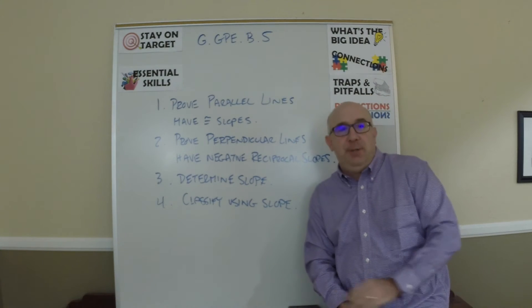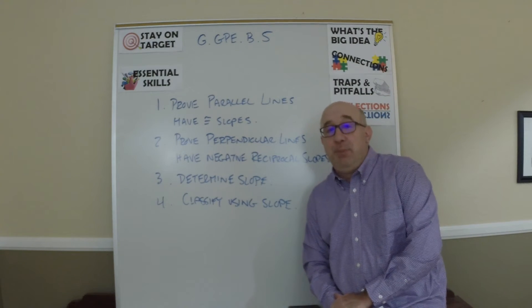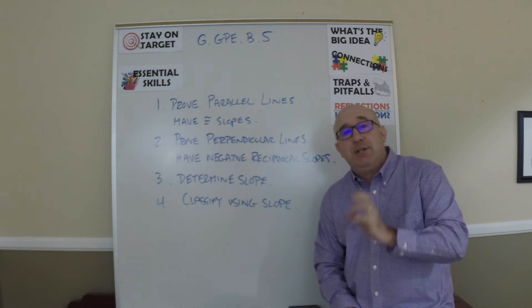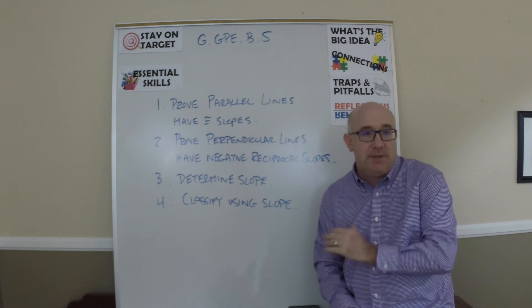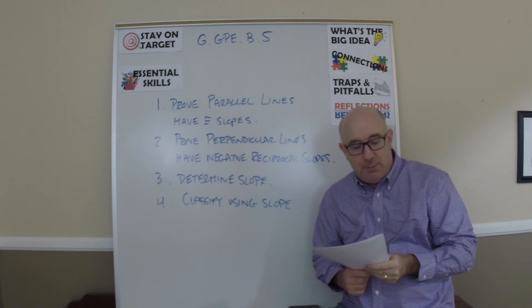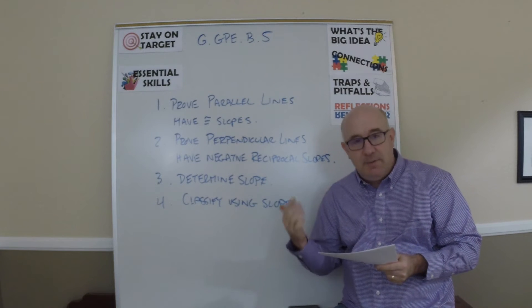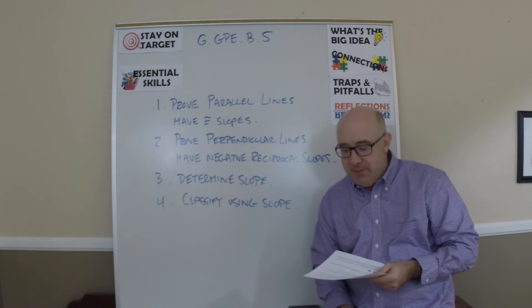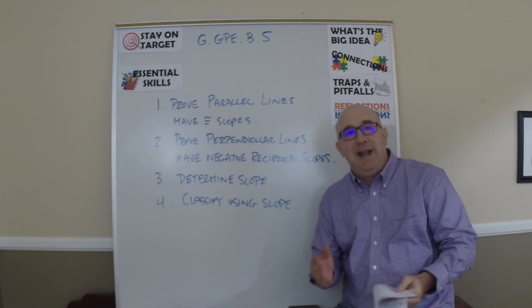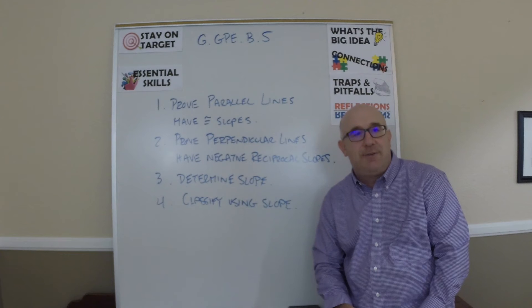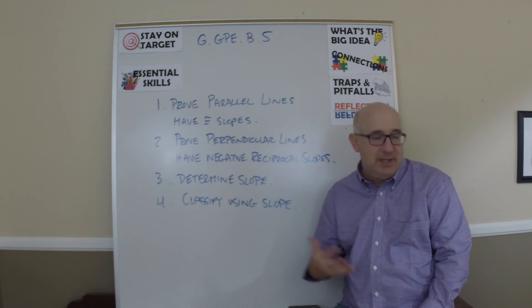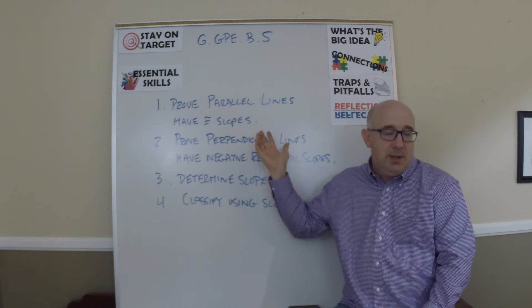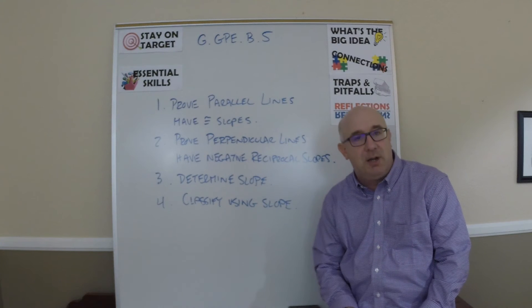Alright, let's look at GGPE B5. You can see by the board the word slope in every part of this objective. It talks about proving the slope criteria for parallel and perpendicular lines, use those to solve geometric problems. Very open-ended again, but I think we've done enough of these kinds of things to know what this looks like. So this is really about establishing the characteristics of parallel lines.